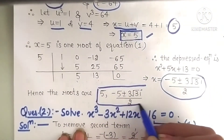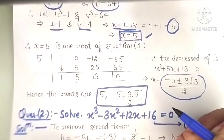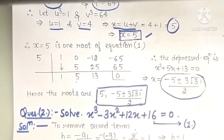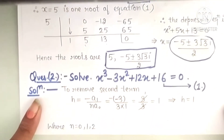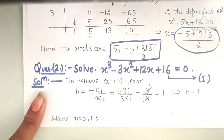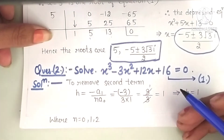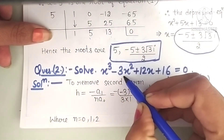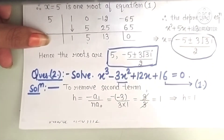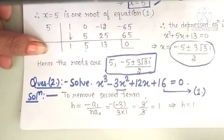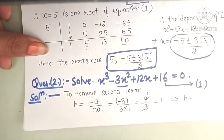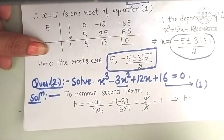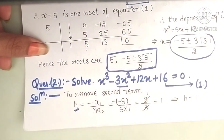Now we got a question in which we didn't have a square term — that was the first example. Now let's do a question in which we have a square term given, and see how we remove it. This is my new question, which has a square term. The first thing is that we must remove the square term.